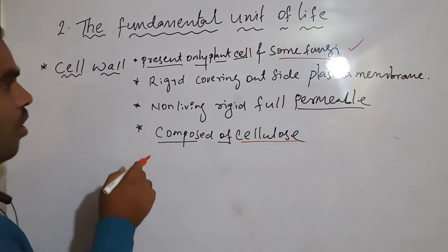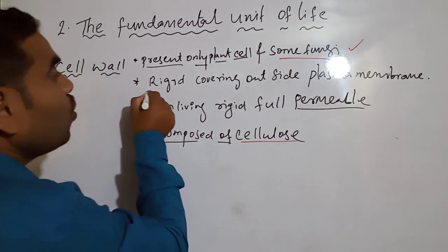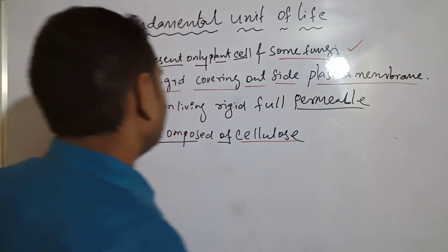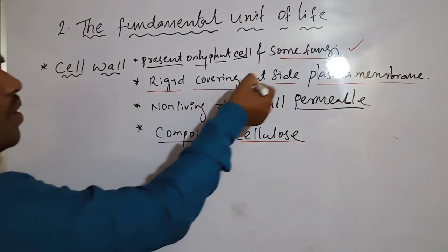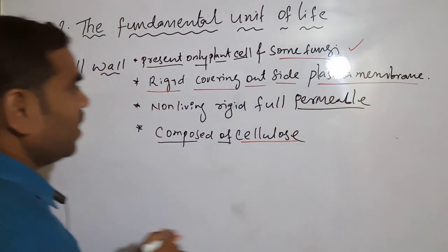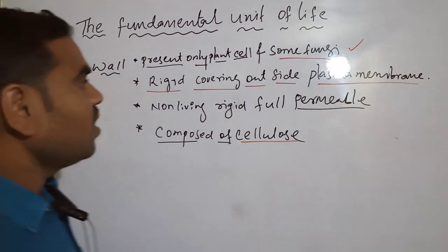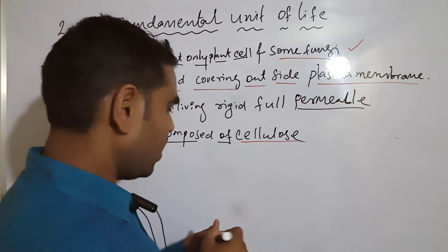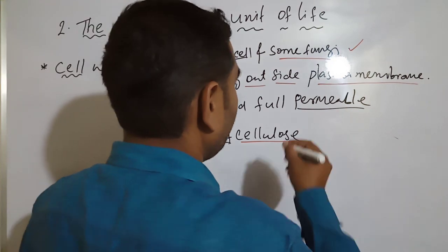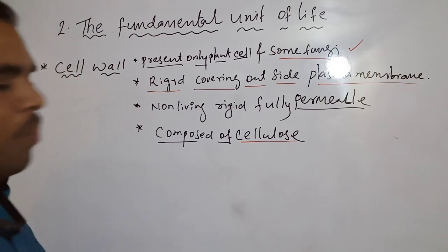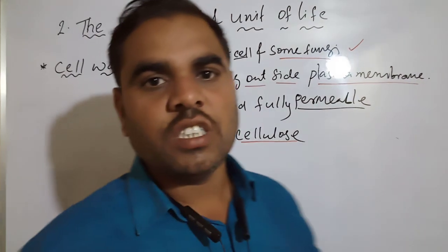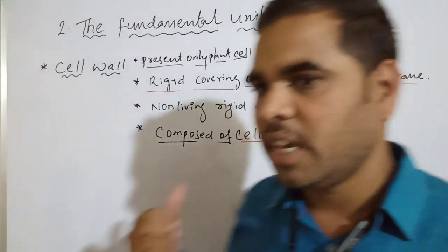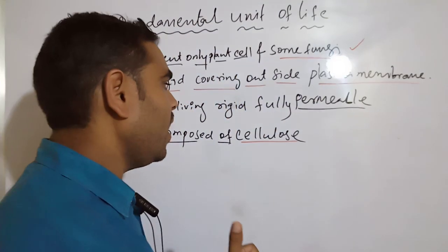This is a very important lesson, so you have to write notes. Key points: rigid covering outer side plasma membrane, non-living, rigid, fully permeable, and composed of cellulose - cellulose is a type of carbohydrate present in the cell wall.